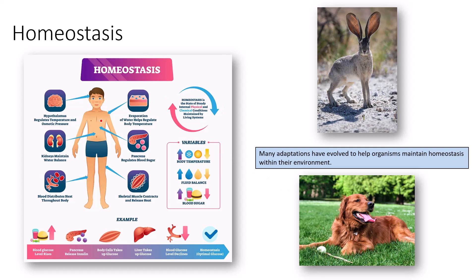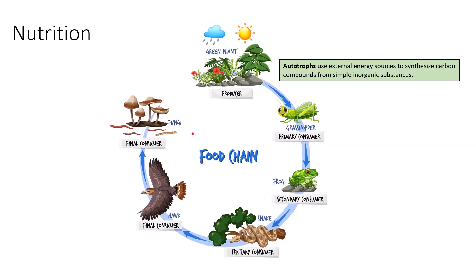In humans, homeostasis involves the ability to sweat when the body gets too hot and to shiver when it gets too cold. We can trigger the release of hormones from the brain — typically released from the pancreas and adrenal glands — to help regulate different body processes. Blood sugar, for example, is regulated through the pancreas and liver. Our muscles can contract to produce heat when we shiver. We are constantly regulating many different variables within our body.